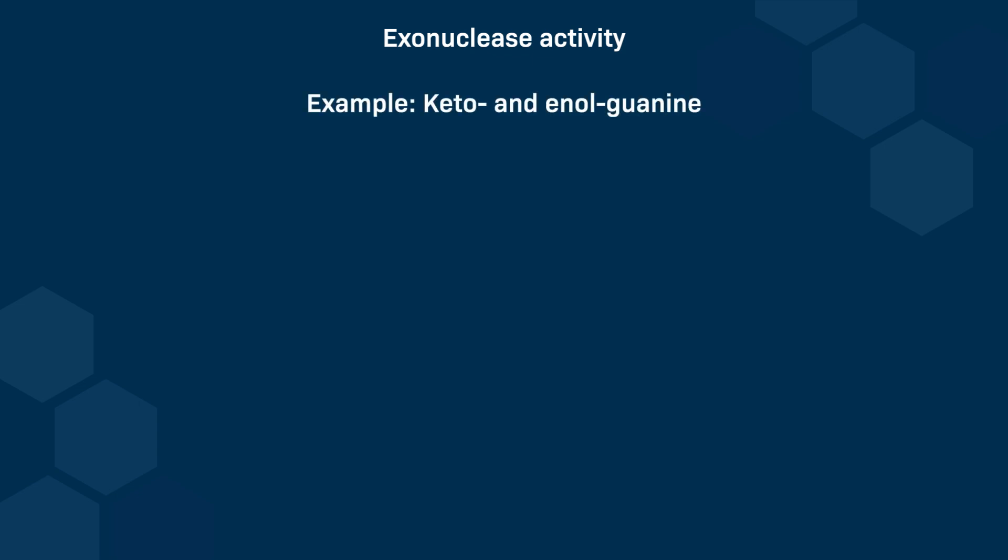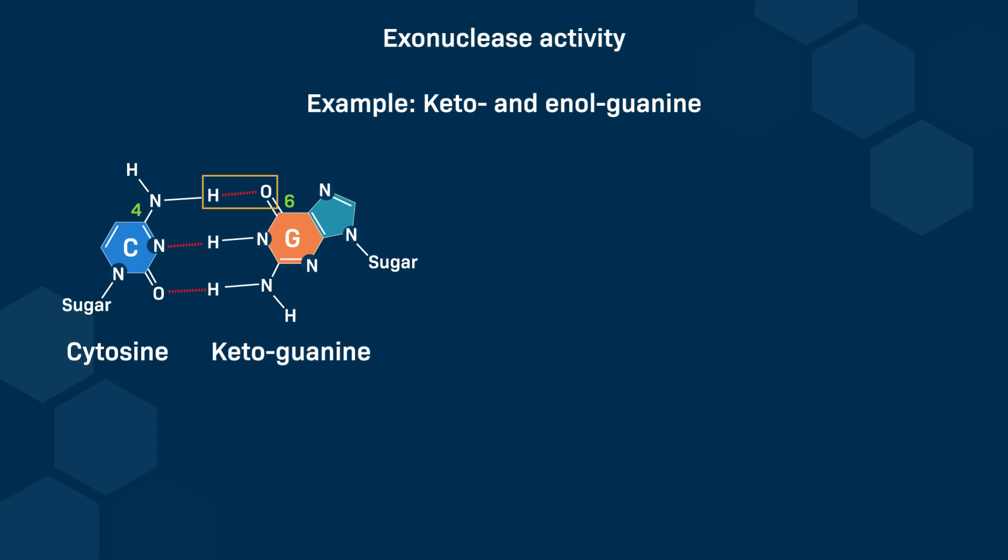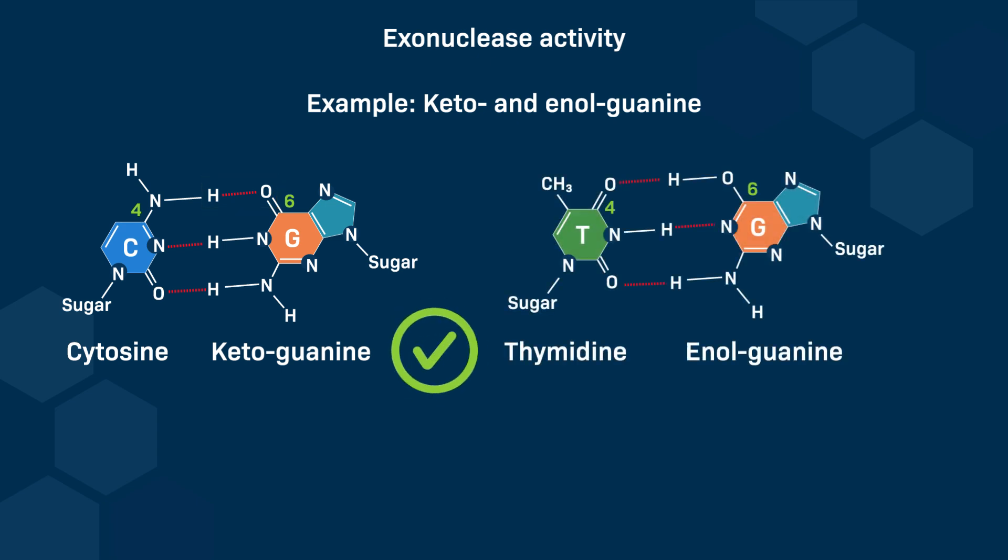For example, consider keto and enol guanine. In the keto form, guanine has a carbonyl group on carbon-6 that can form a hydrogen bond with the NH group on carbon-4 of cytosine, which results in the correct GC pairing. In the enol form, guanine has a hydroxyl group on carbon-6, which allows it to form a hydrogen bond with the carbonyl group on carbon-4 of thymine. This leads to a TG mismatch. If a tautomeric nucleotide is incorporated, the exonuclease activity of DNA polymerase corrects this misincorporation. This exonuclease activity ensures high fidelity in DNA replication by removing incorrectly paired nucleotides.